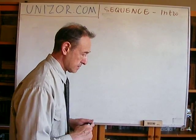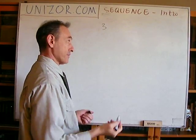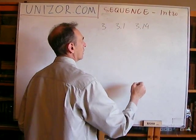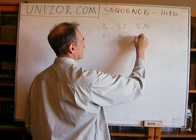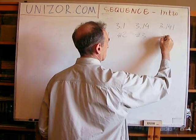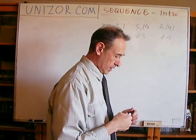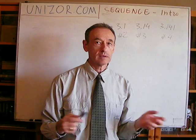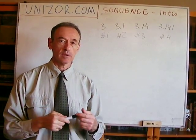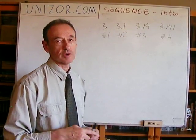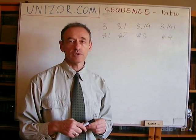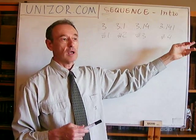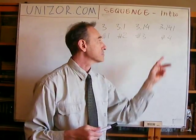Let's consider the following sequence. Number one is 3. Number two is 3.1. Number three is 3.14. Number four is 3.141, etc. These are expressions of the number pi, which is the ratio between the circumference of a circle to its diameter. We often use 3.14 as pi, but that's an approximation. Pi is an irrational number, which means it has an infinite number of non-periodic decimal digits after the decimal point.